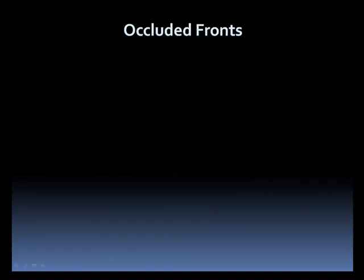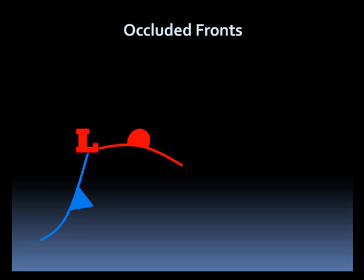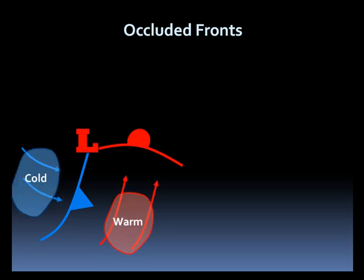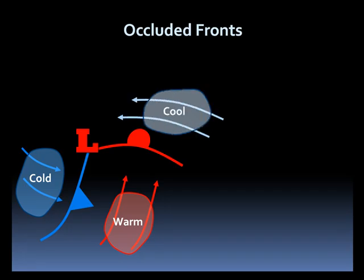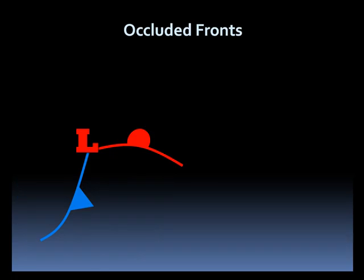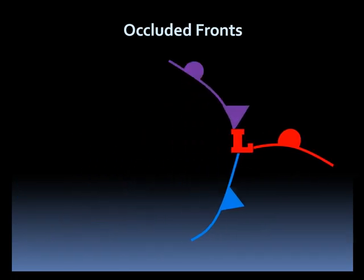Occluded fronts develop as a cold front overtakes a warm front. In general, cold fronts move faster than warm fronts. Let's take a look at this low-pressure system with accompanying cold and warm front. Note the warm, cold, and cool air. As it moves east, the colder air behind the cold front runs into the cooler air north of the warm front, and whatever air mass is colder undercuts the other.